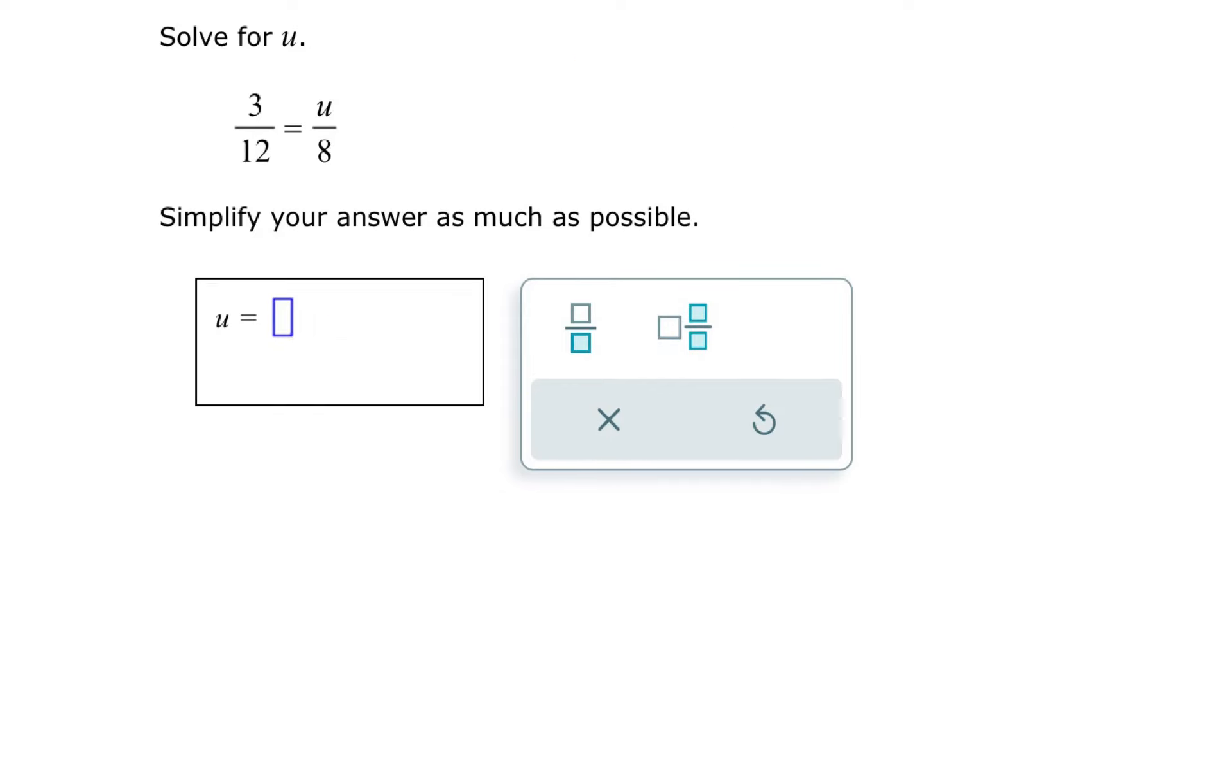Our next example, we can simplify 3 twelfths by dividing by 3 over 3, and then we get 1 over 4.